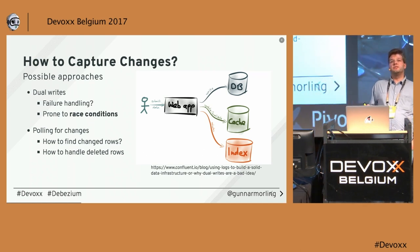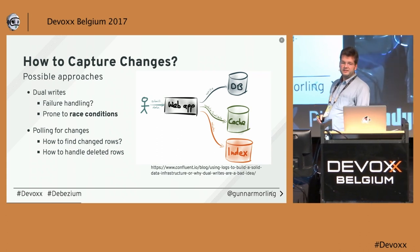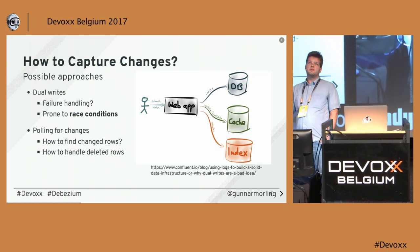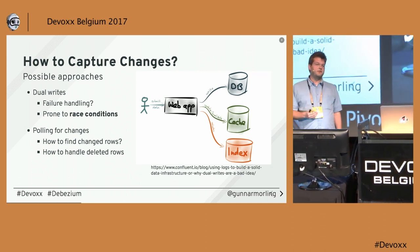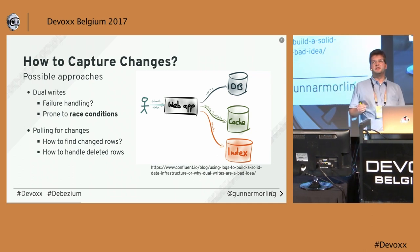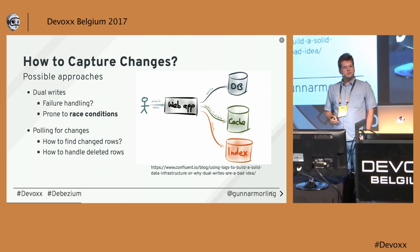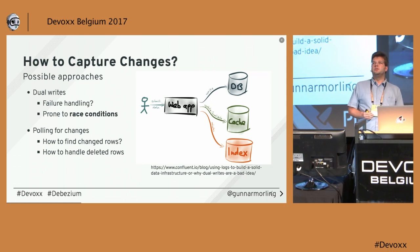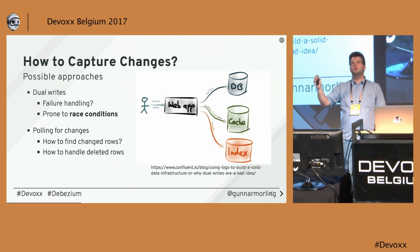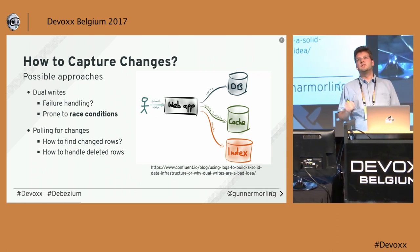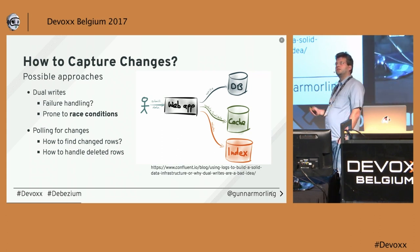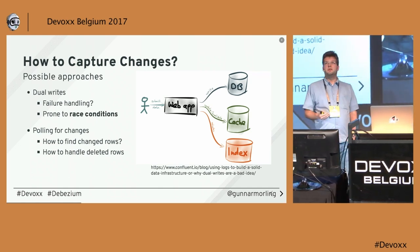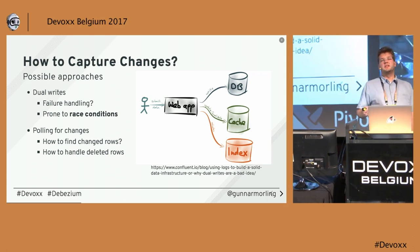Another idea is polling — frequently querying your database for updates. This creates a conflict between how often you poll (and thus how current the data is) versus the performance hit on the database. You could poll every half second, but that will have a severe load impact. Also, how do you find changed rows? Usually you'd need an update flag in the table to know when it last changed — this affects your data model. And finally, you can't learn about deleted rows by polling, because you simply can't query for them.